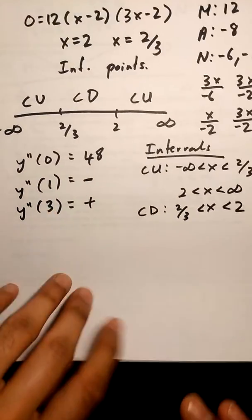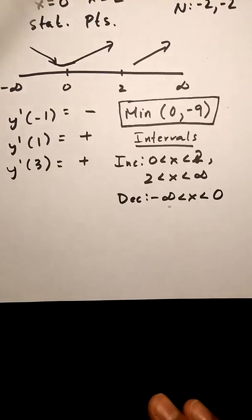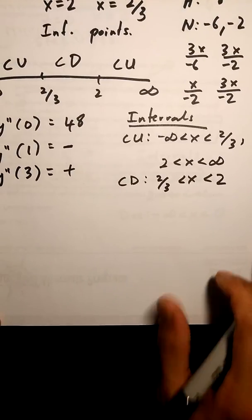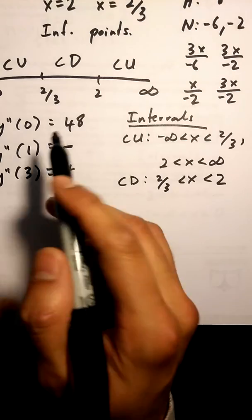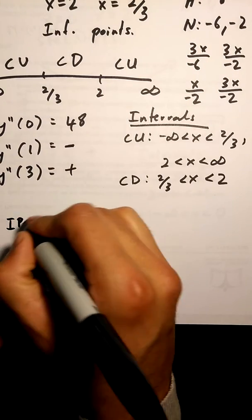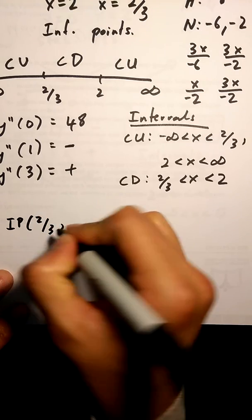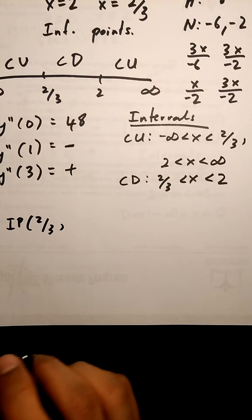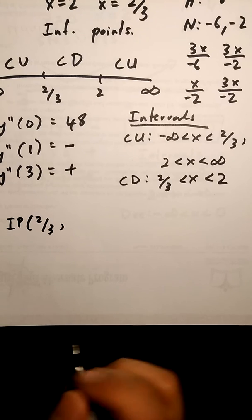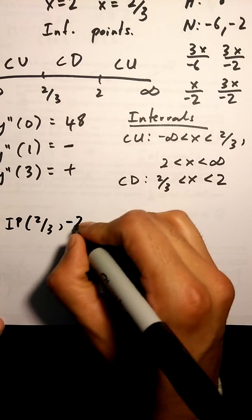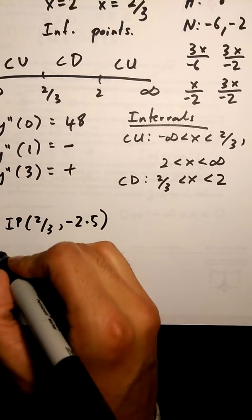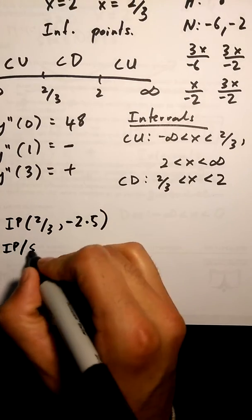Last, I'm going to do stationary points and inflection points. Remember, I already have a minimum of 0 comma negative 9. Okay, so I have an inflection point at 2 over 3, negative 2.5 - put that in the original equation.